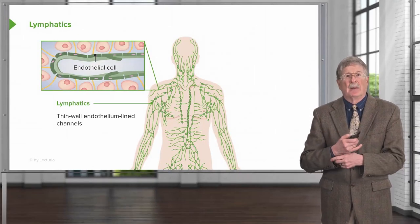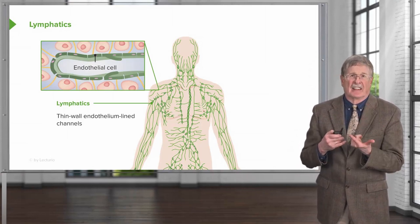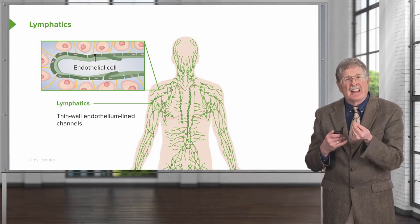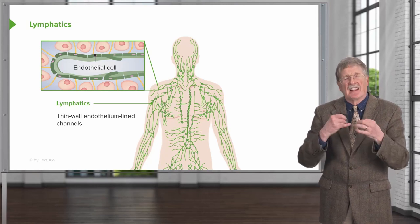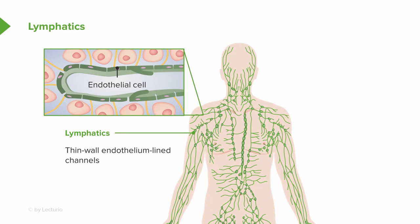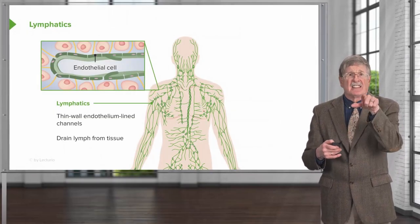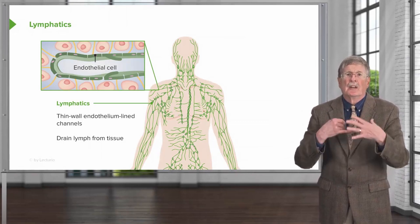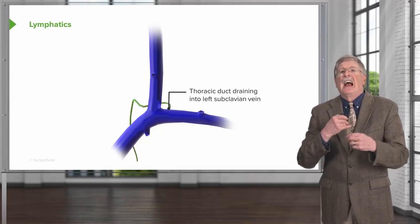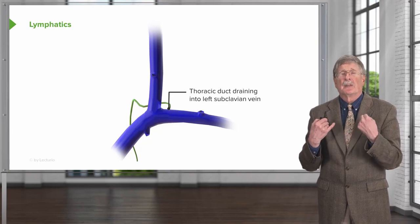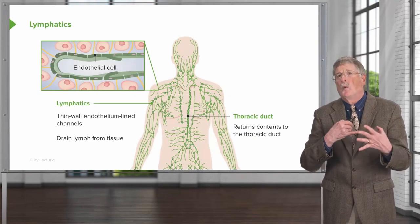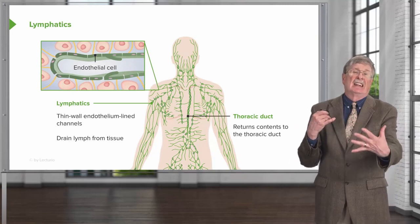One part of the vasculature that doesn't get much attention is the lymphatics. Lymphatics are lined by endothelial cells — different from those lining blood vessels, but still endothelial cells with some different features. They are thin-walled structures that drain into various lymph nodes. They take edema fluid from the tissue and drain it back into the circulation. That fluid gets sampled along the way in the lymph nodes, and eventually returns through the thoracic duct to the left subclavian vein. Once fluid leaves the vasculature, it comes back via the lymphatics.